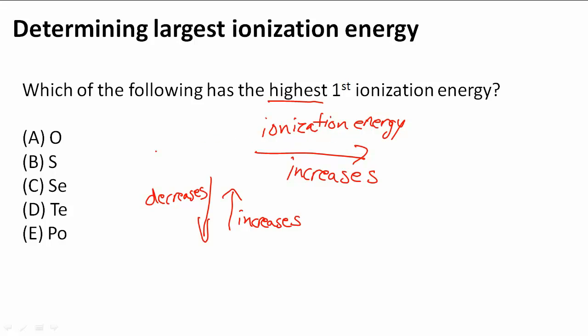Let's take a look at the five elements we have: O, S, Se, Te, and Po. These are all part of the same group going down. They go in order.